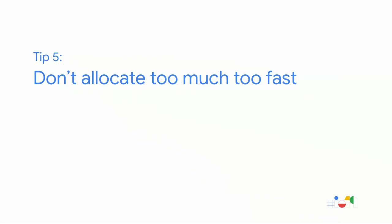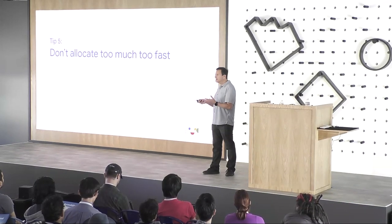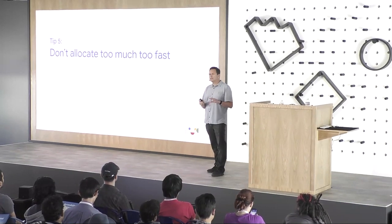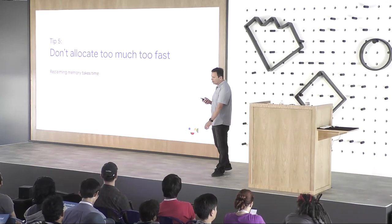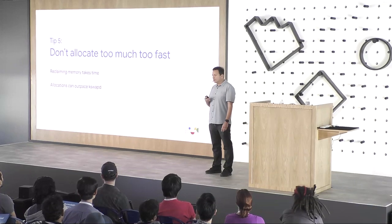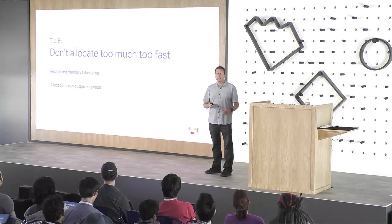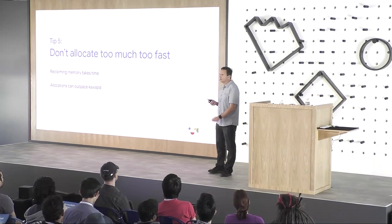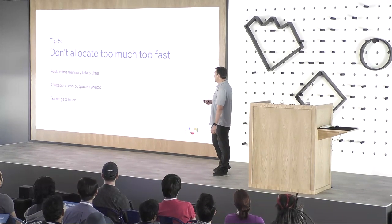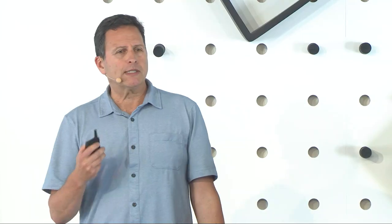Another tip: don't allocate too much too fast. The speed of allocations can matter in sensitive low memory situations. Reclaiming memory takes time, so you don't want your allocations to outpace how fast memory can be reclaimed. The result is your game gets killed — potentially sooner than it really needs to be.